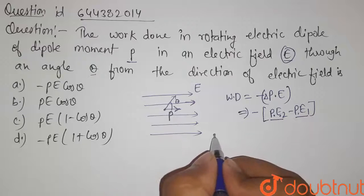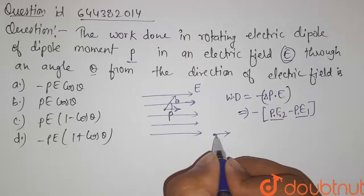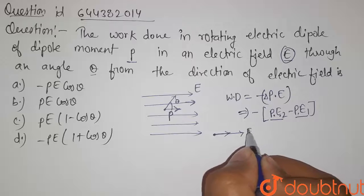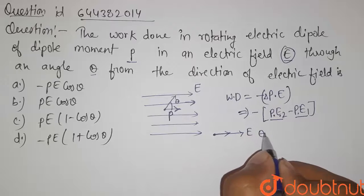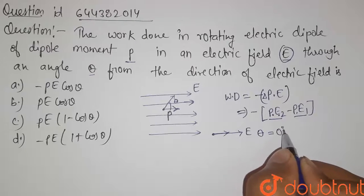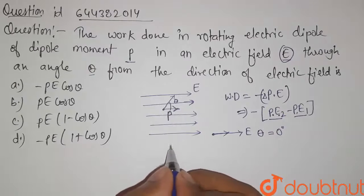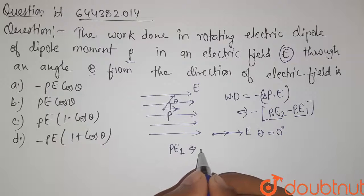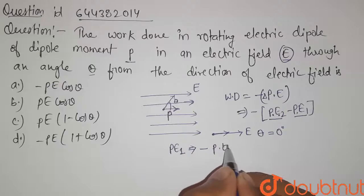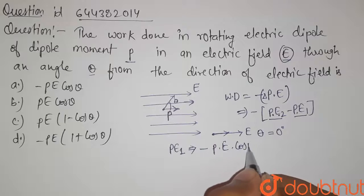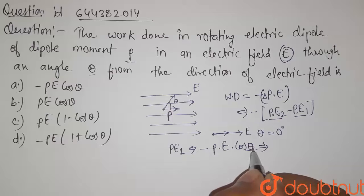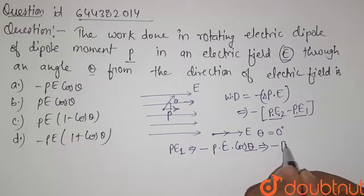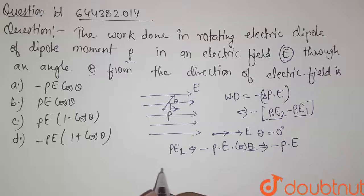Initially, the dipole moment has the same direction as that of the electric field, so the angle between these two is equal to zero degrees. So the initial potential energy, PE1, is given by minus p times E times cos(theta), and since theta here is zero degrees, cos(0) equals one. So the initial potential energy is equal to minus p times E.